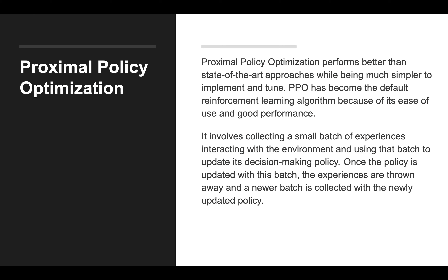We used two types of algorithms in this project: Proximal Policy Optimization (PPO) and Soft Actor-Critic (SAC). To explain these, we need to understand the concept of a policy. A policy defines how an agent acts from a specific state — it is a network of successful steps from that state to a successful outcome. PPO has become the default reinforcement learning algorithm because of its ease of use and good performance. It involves collecting a small batch of experiences by interacting with the environment and using that batch to update its decision-making policy. Once the policy is updated, the experiences are discarded and a newer batch is collected with the newly updated policy.